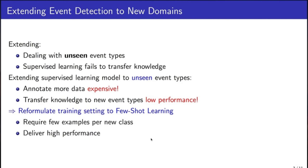Therefore, in this study, instead of following supervised learning settings, we propose to formulate event detection as a few-shot learning problem. Because few-shot learning offers a very high generalization ability on unseen classes, while requiring just a few examples per class.